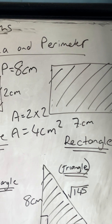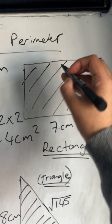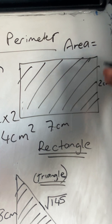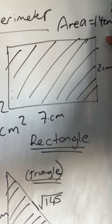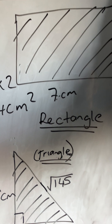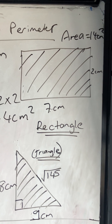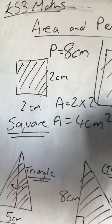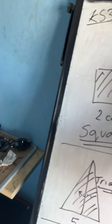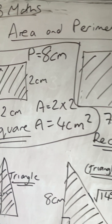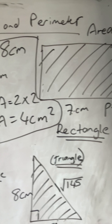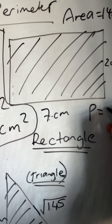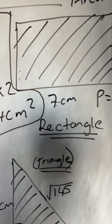For the rectangle, the area would be 7×2 = 14 centimetres squared. The perimeter is 7+2+7+2 = 18 centimetres.